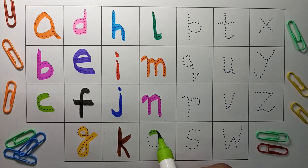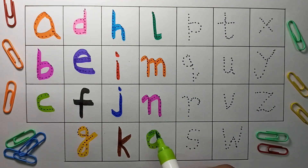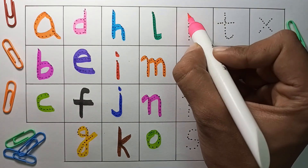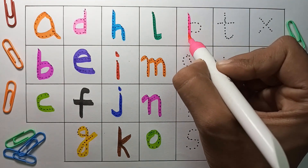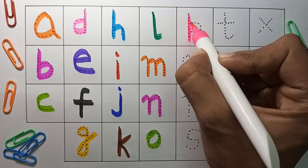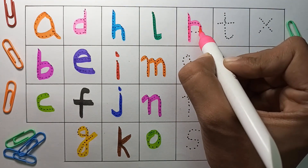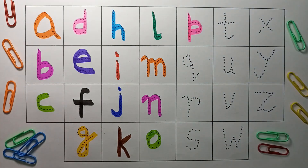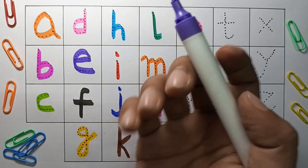O, O for owl, pink color. P, P for parrot, violet color.